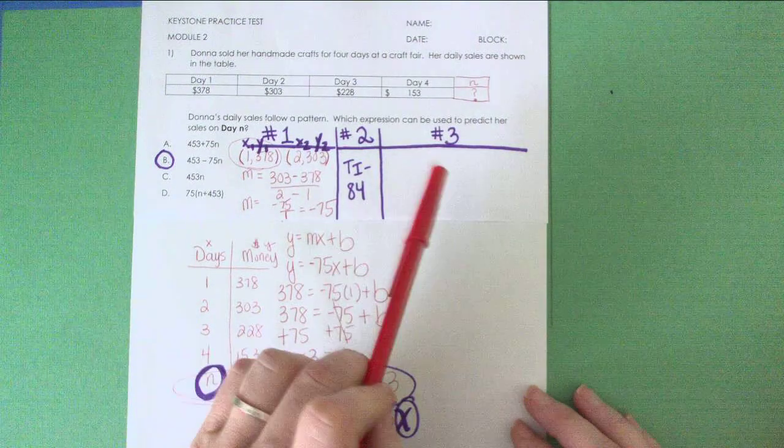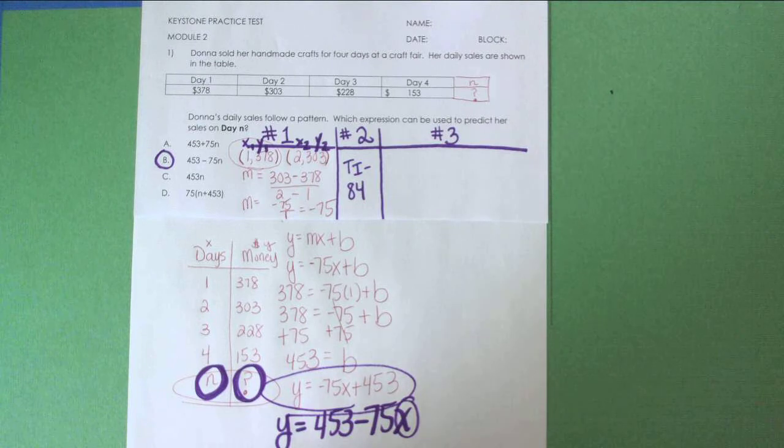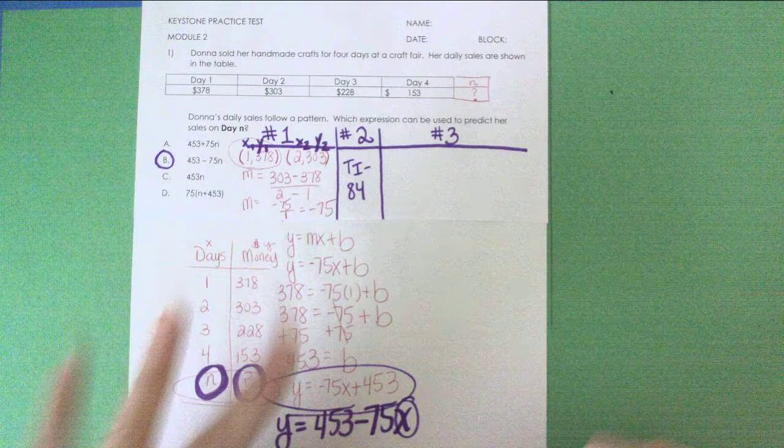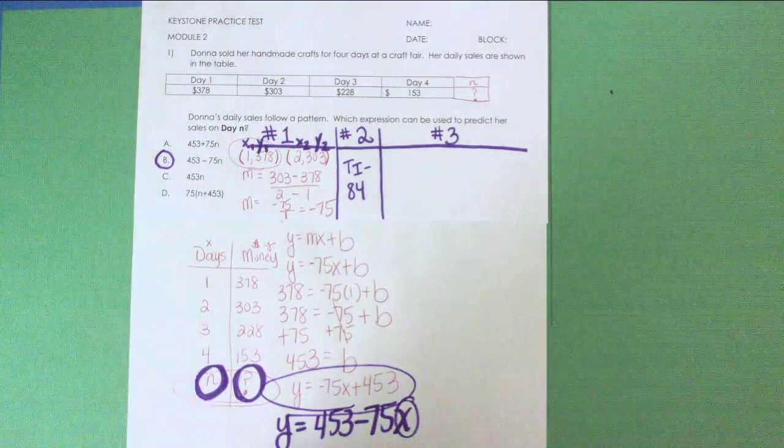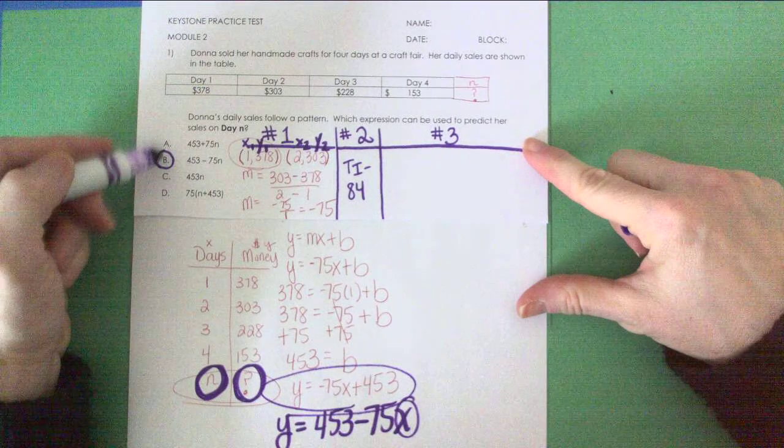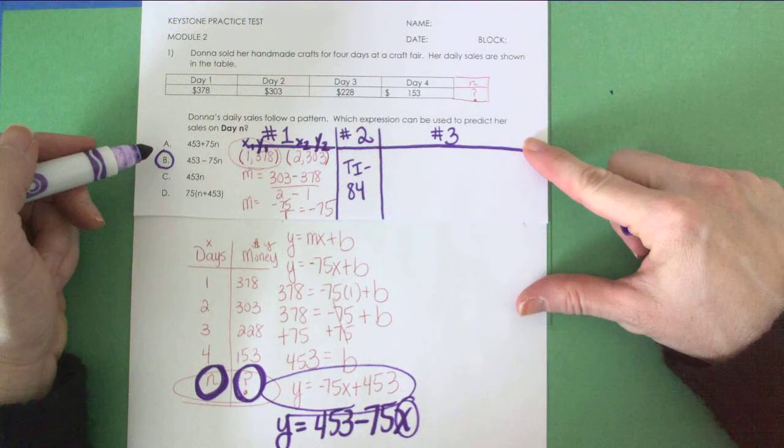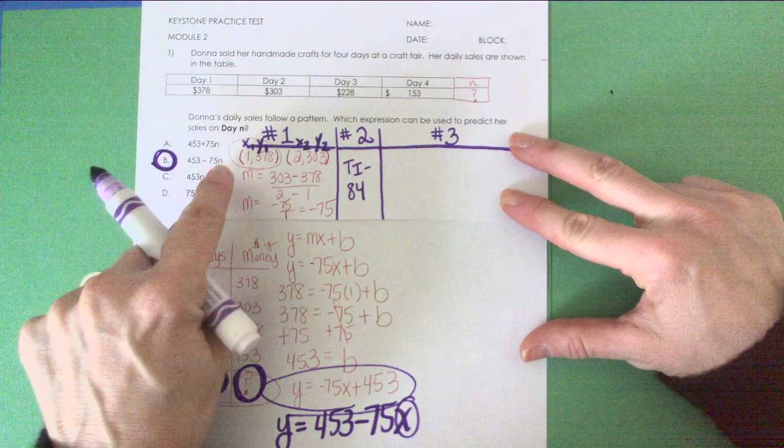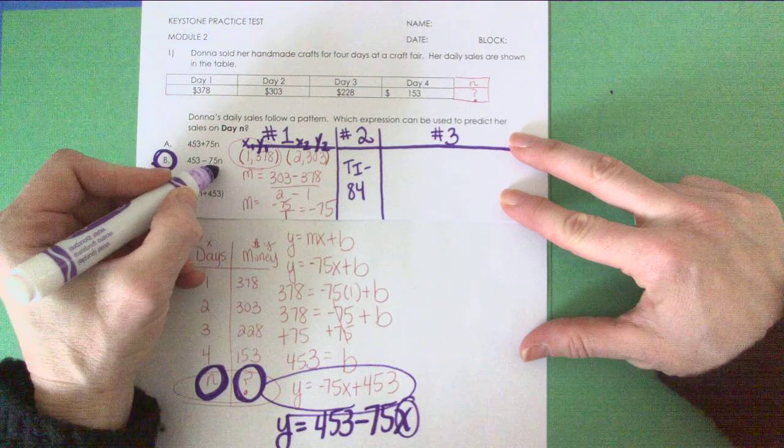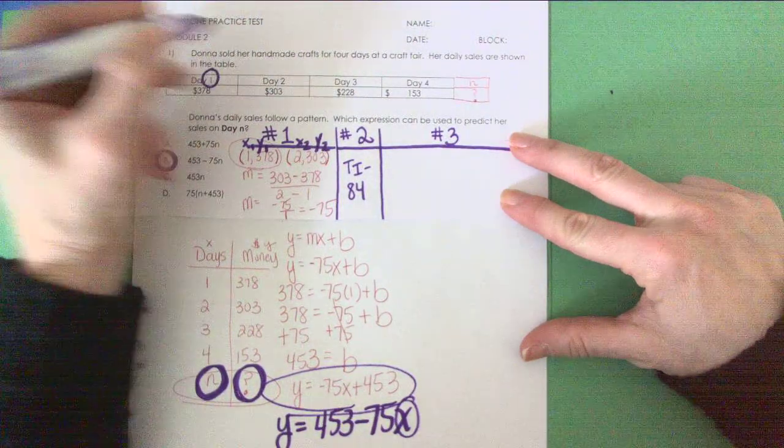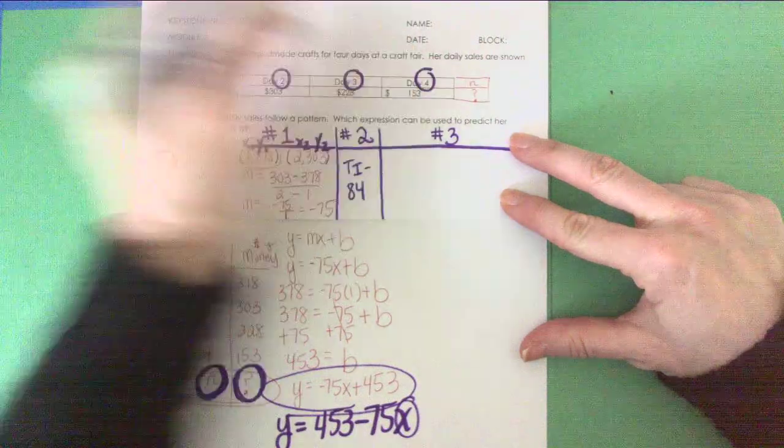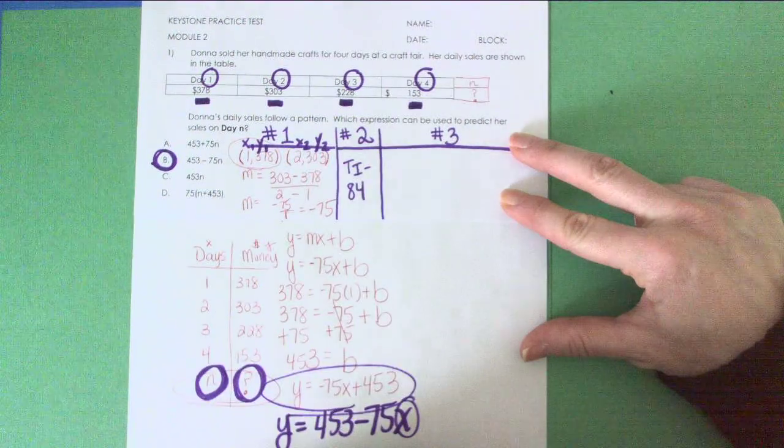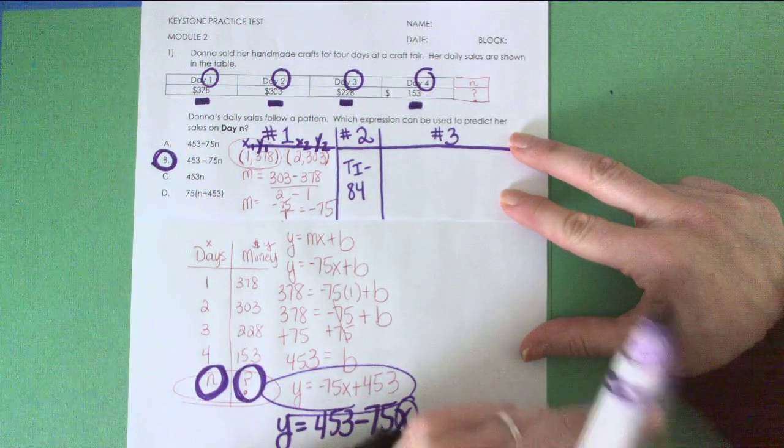Now here's method three. This I would call a test taking strategy when your test is multiple choice. Say you don't want to do any of this or you forget how to do this. What you can do is look at your answers and kind of bounce off your answers. Let me show you how. If you look at answer choice B, if you take that answer and where the N is you insert 1, 2, 3, and 4, and you get out 378, 303, 228, and 153, you know your answer is right.